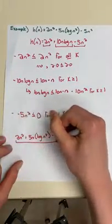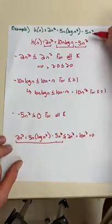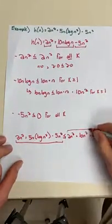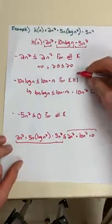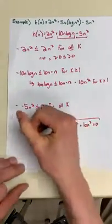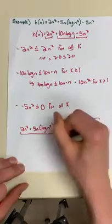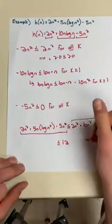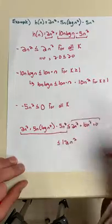This portion here is our original equation from the top, whereas this portion here is composed of all of the bounds we found for the separate portions. If we simplify this down further, we get that our function grows no faster than 12n².